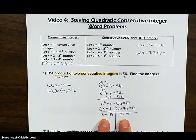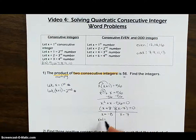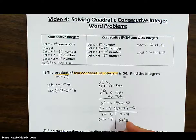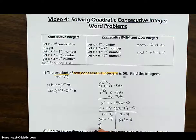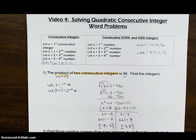We weren't finding just one number — we were finding two. If x equals negative 8, the second number (x plus 1) is negative 8 plus 1, which is negative 7. If x equals 7, the second number (x plus 1) is 7 plus 1, which is 8. So the two sets of answers are: negative 8 and negative 7, or positive 7 and positive 8 — both multiply to positive 56.